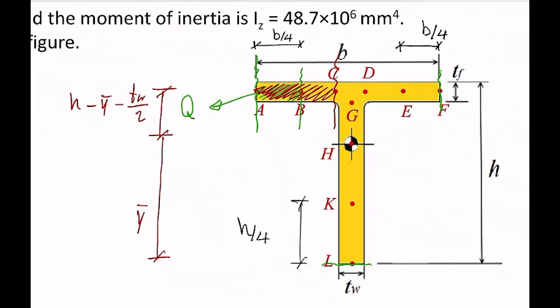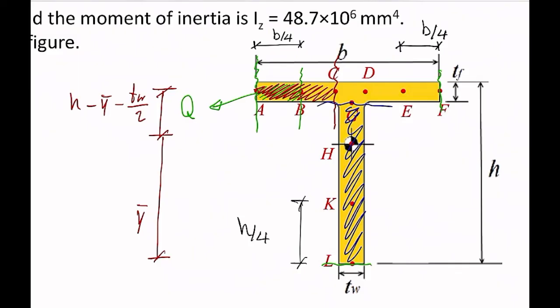What about point C? We cut in a vertical direction, and the cut area is used for calculating Q. The same approach applies to point D. Point G is different from point C: point C is on the flange and we cut vertically; point G is on the web, so we cut horizontally. For point G, we can consider the entire area of the flange above, or the area below — either is fine.